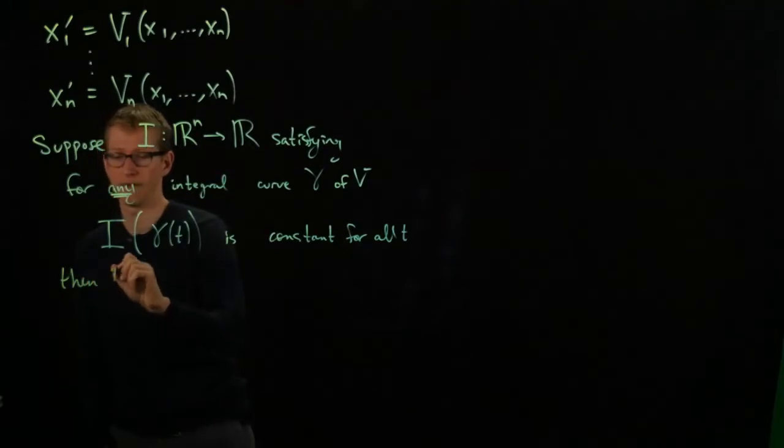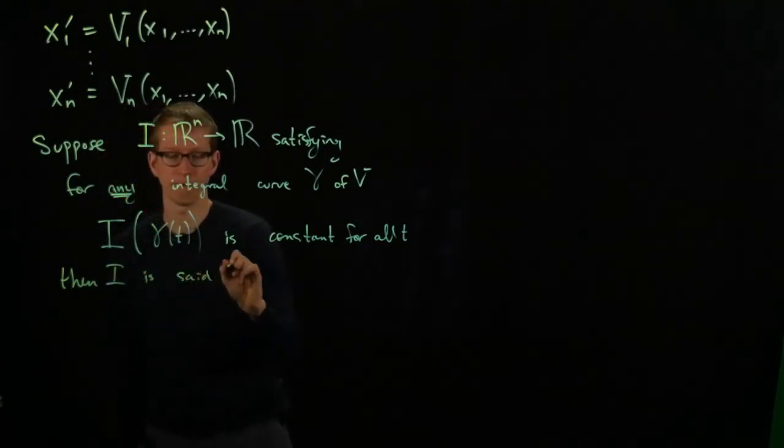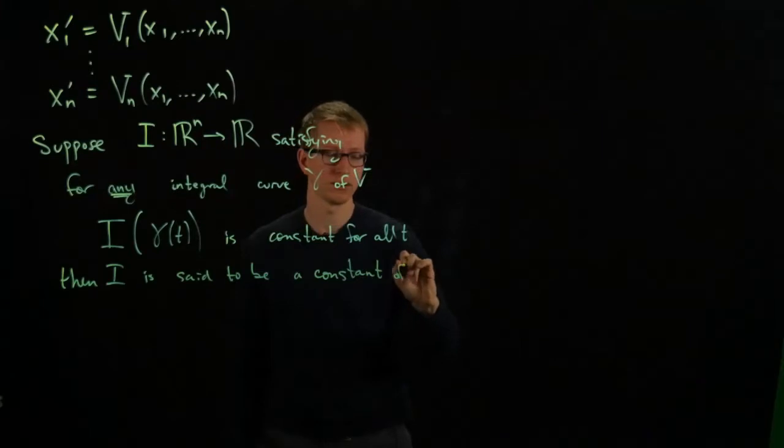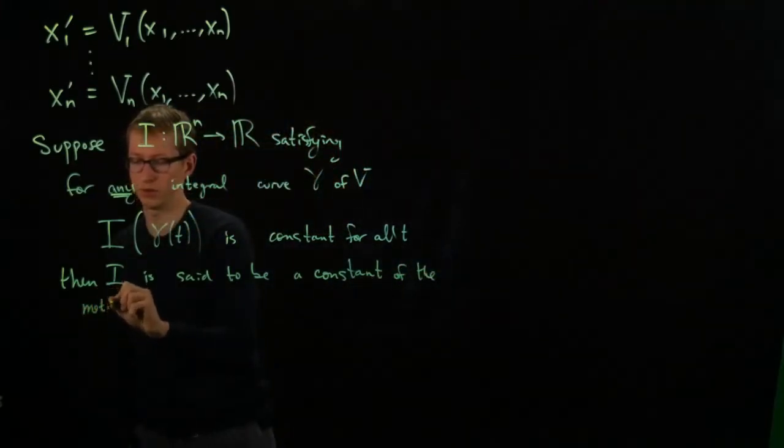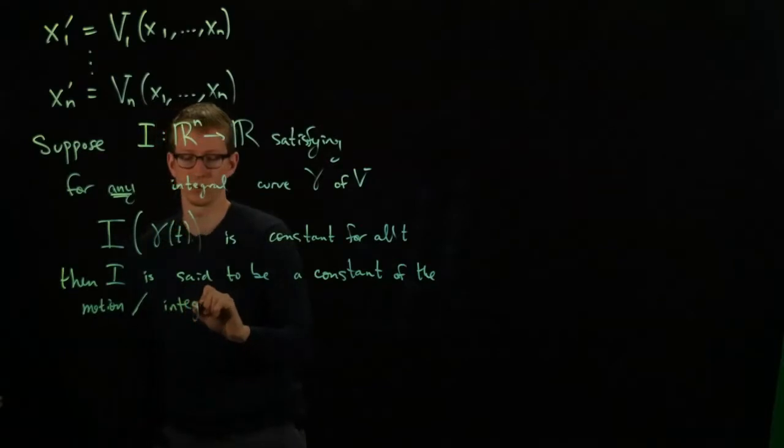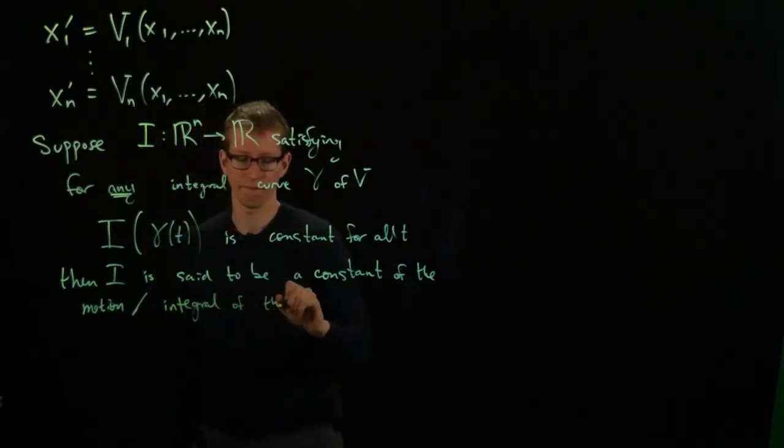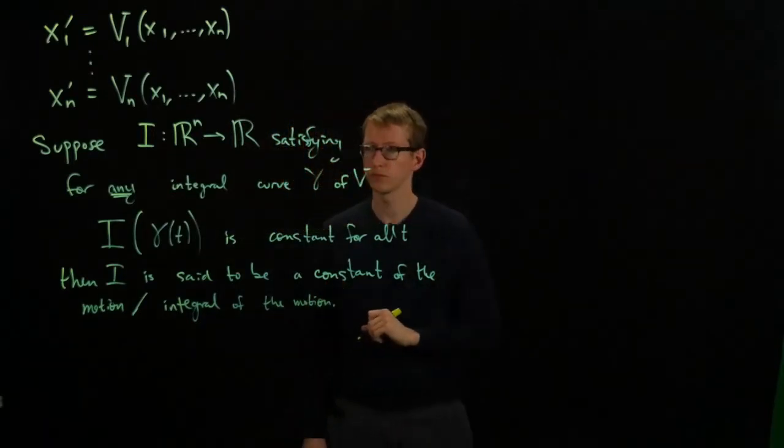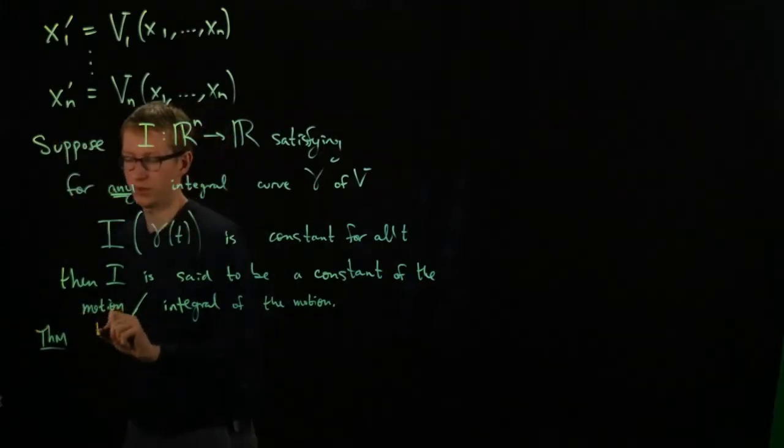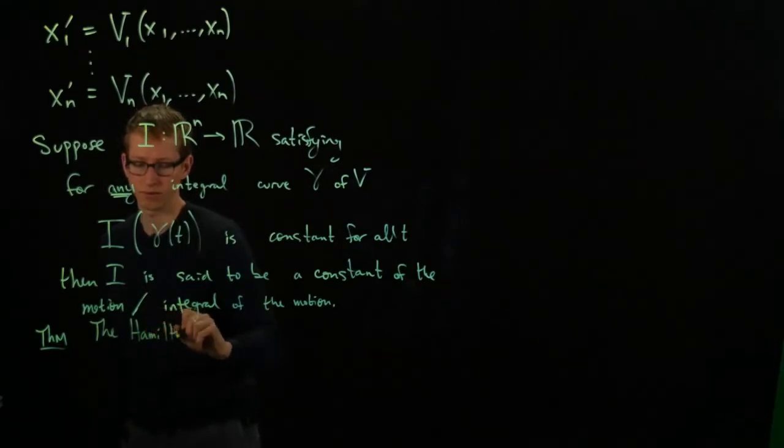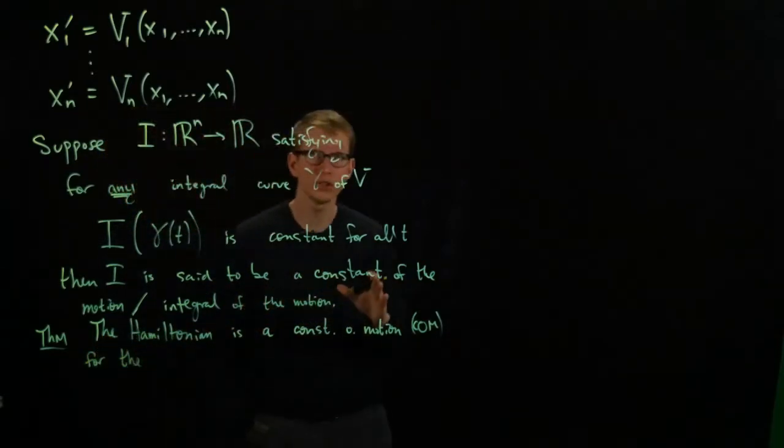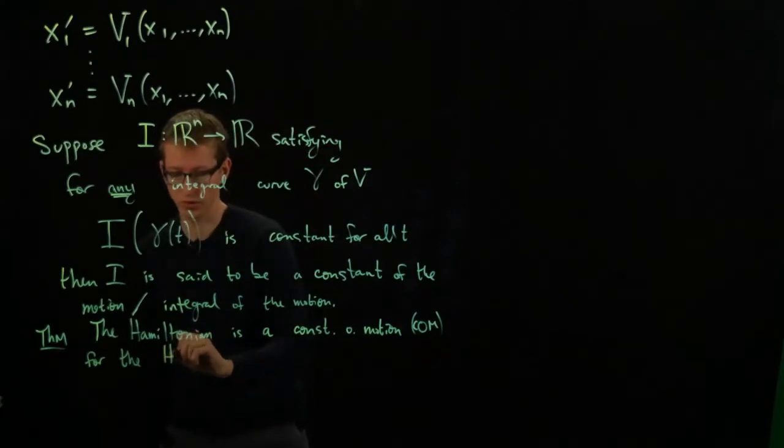Then, i is said to be a constant of the motion, or sometimes also equivalently, another name for this is an integral of the motion. And, it's a theorem. The Hamiltonian is a constant of the motion for the Hamiltonian vector field associated to it.